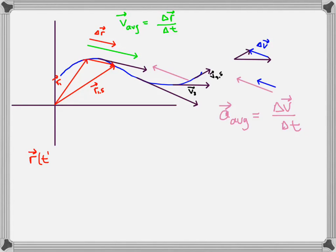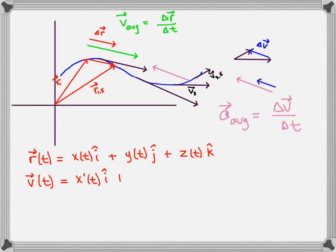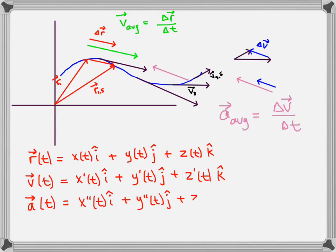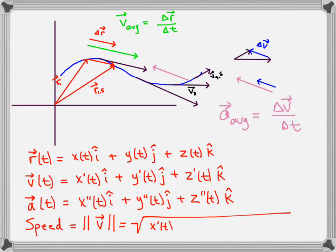Looking at the bottom of the screen, in general that's our position vector. Since velocity is the derivative of position, we can take the derivative of each component of the position vector — the derivative of the x component, the y component, and the z component with respect to time. Acceleration, being the derivative of velocity and the second derivative of position, is also listed. In any dimension, speed is the magnitude of the velocity vector: square each component of the velocity vector, add all those components together, and take the square root.